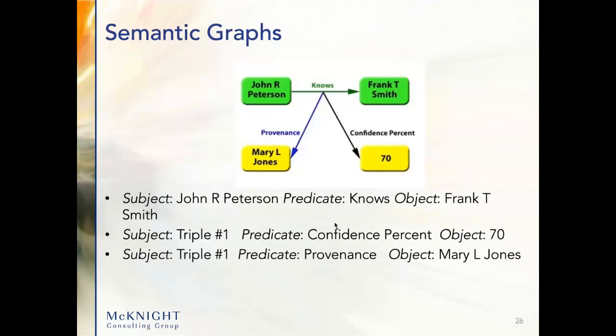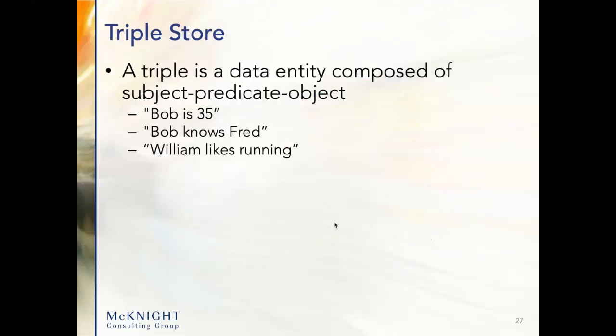We store this in what's called a triple — subject, predicate, object. We have a few going on here: one subject is John Peterson, the predicate is 'knows', and the object is Frank T. Smith. A relational database stores data with all columns of the table, whereas a graph database stores a triple — sometimes known as a quad store, which is effectively the same. We've defined triple number one, and triple number one being the subject, predicate can be confidence percent, and the object of that is 70. All these triples get stored and rendered into the graph and fed into the algorithms.